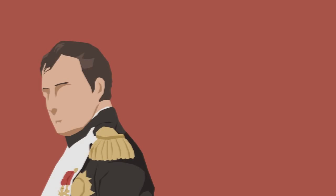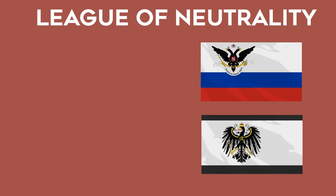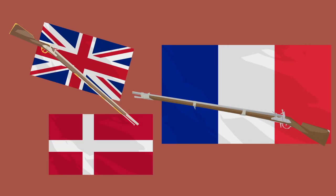Napoleon seized power during the War of the Second Coalition. But due to British policy soon after Napoleon claimed power, Russia and Prussia left the war and formed the League of Neutrality with Denmark. Britain attacked Denmark, forcing it to leave the League and side with France. The war ended in 1802 with Napoleon bringing Switzerland and Tuscany under his influence.